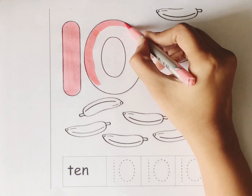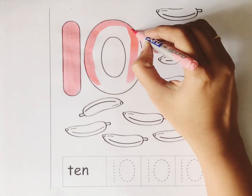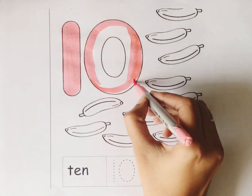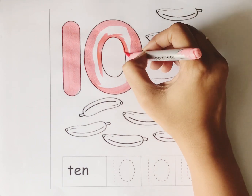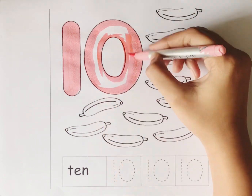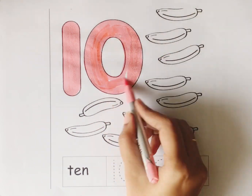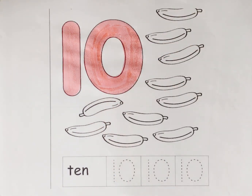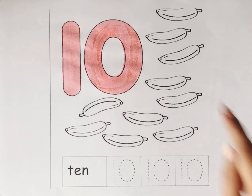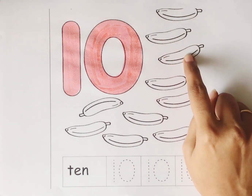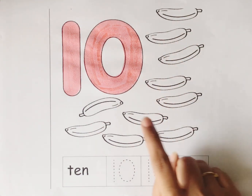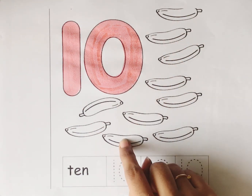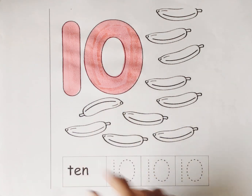Baby pink color. Number 10. Baby pink color. Let's count the bananas: 1, 2, 3, 4, 5, 6, 7, 8, 9, 10. Let's color them.